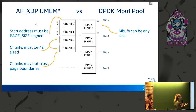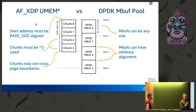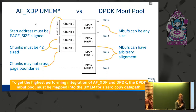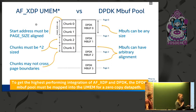Mbufs can be of any size within reason and they can have arbitrary alignment relative to the page size, so they can cross page boundaries. In this example we have an mbuf size of maybe three and a half k, and our mbufs are crossing page boundaries all over the place. In order to get the highest-performing integration of AF_XDP and DPDK we need to map the mbuf pool directly into the umem to get a zero-copy data path. But as you can see, that's not possible here — most DPDK mbuf pool configurations won't comply with the restrictions of the umem.